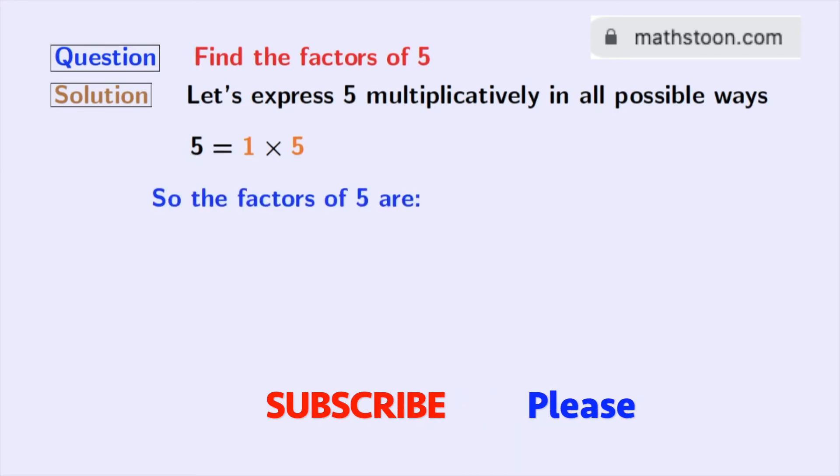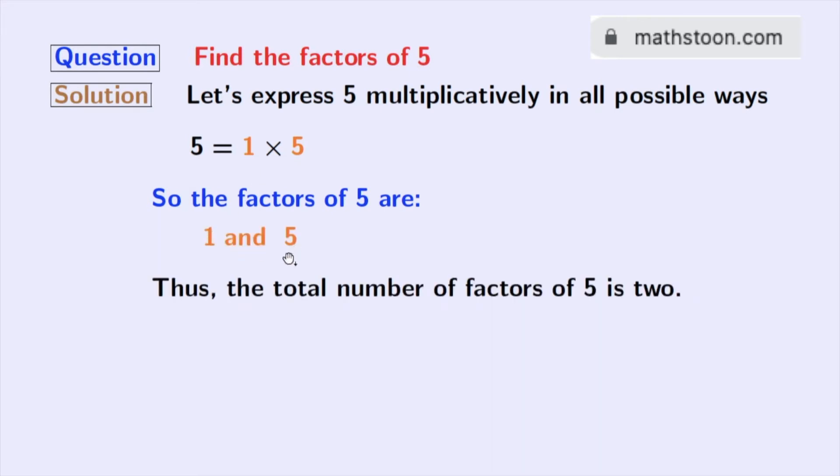So we have all the factors of 5, which are 1 and 5. The total number of factors of 5 is 2.